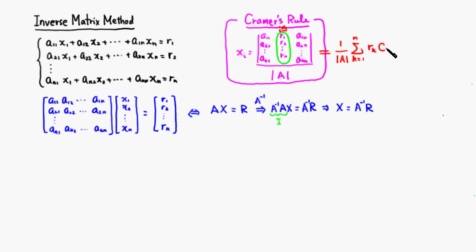So that summation gives us Cₖᵢ times Rₖ — and this is the same thing as Cramer's rule for xᵢ.